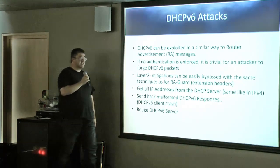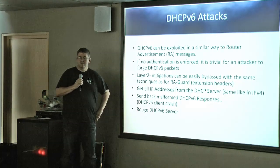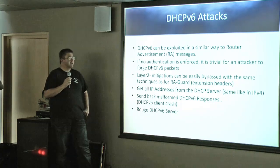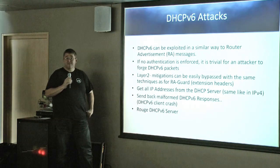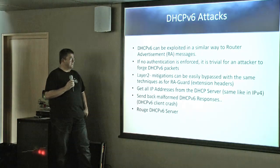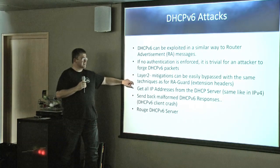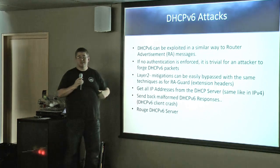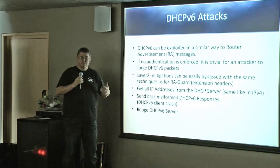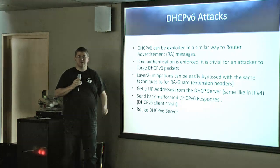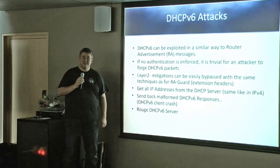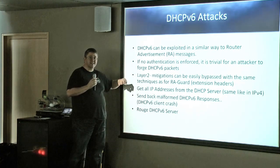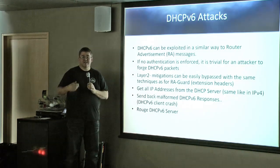With DHCPv6, you can run a rogue DHCPv6 server. In IPv4, switch-level DHCP snooping prevents rogue DHCP replies, but normally that protection does not work for IPv6. And even where it is enabled, there are ways using IPv6 extension headers to bypass it.